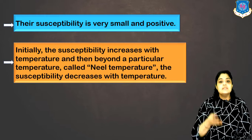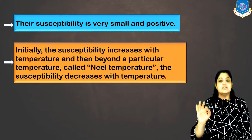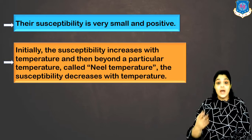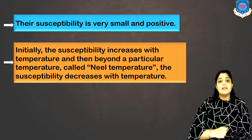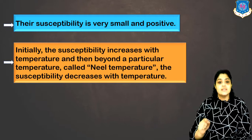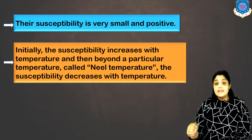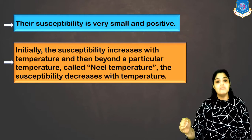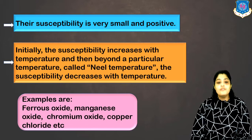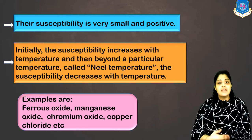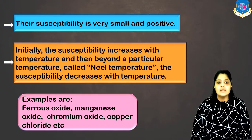Their susceptibility is very small though it has a positive value. Initially the susceptibility increases with temperature, but beyond a particular temperature called the Néel temperature, the susceptibility decreases with temperature. Because with the increase in temperature some dipoles get randomly oriented, leading to a reduction in magnetization. Since susceptibility equals magnetization divided by applied field, if magnetization decreases, susceptibility also decreases. Examples: ferrous oxide, manganese oxide, chromium oxide, copper chloride.